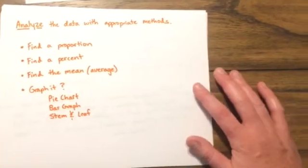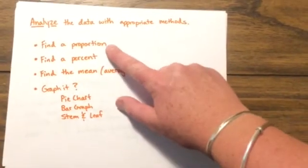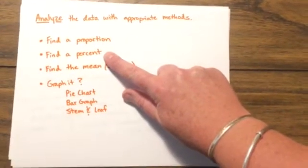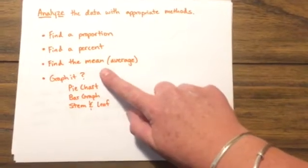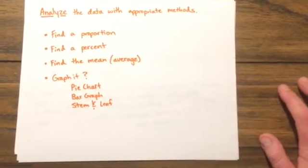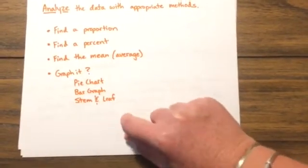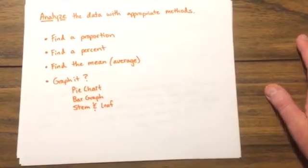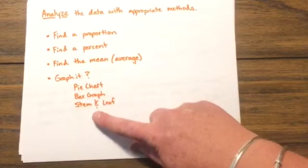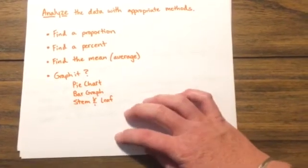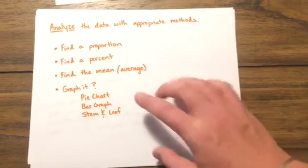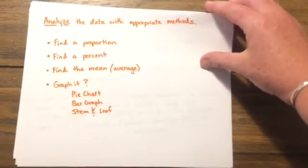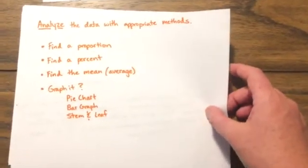The third phase is to analyze the data with appropriate methods. For example, you might find the proportion of people that were female, or a percentage of people that think school should start later, or the mean or average height of a group of soccer players. Graphing is optional in most cases. You consider whether it would be appropriate to use a pie chart, a bar graph, or a stem and leaf plot. It depends on which data you have gathered and what would be appropriate for your questions — whether from a survey or direct observation.